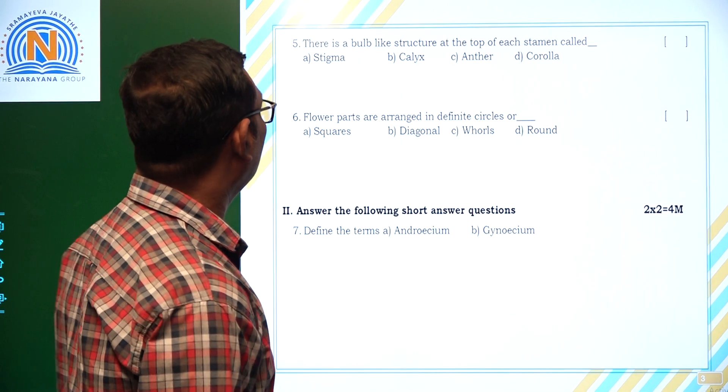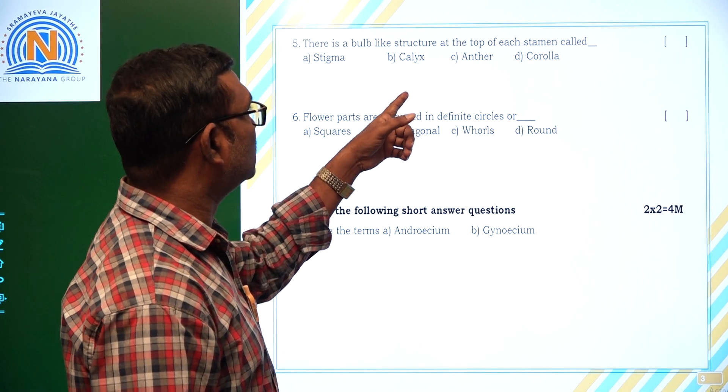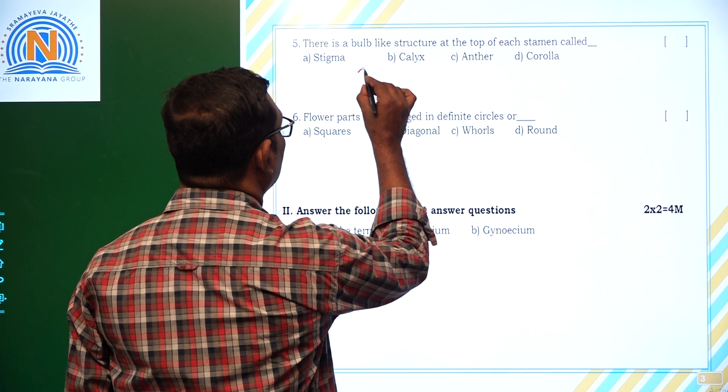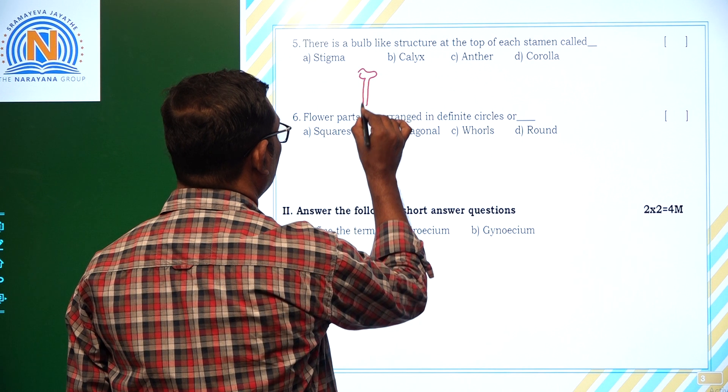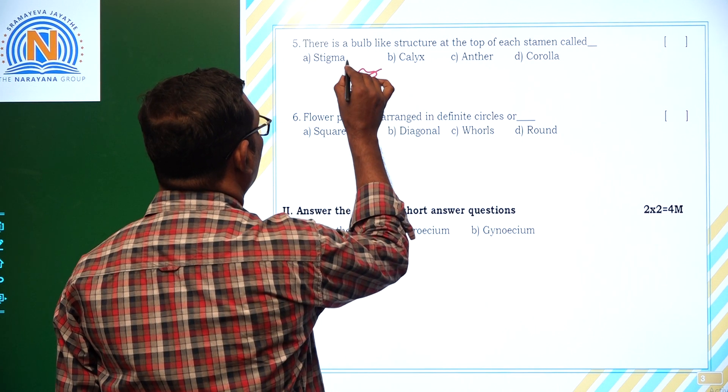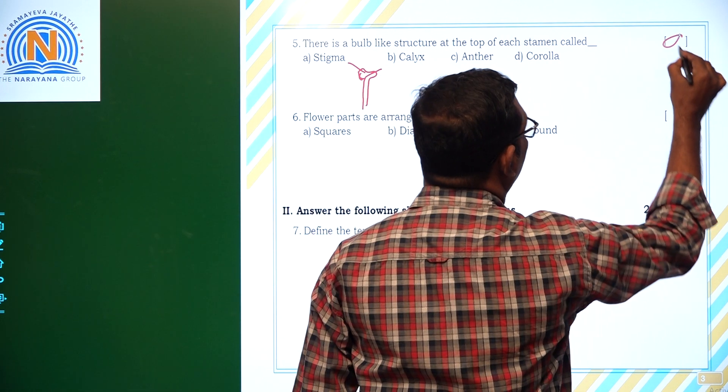Next question, fifth question: There is a bulb-like structure at the top of each stamen called. Suppose here, this is a stamen. This is a bulb-like structure. This is called stigma. Option A. Right.